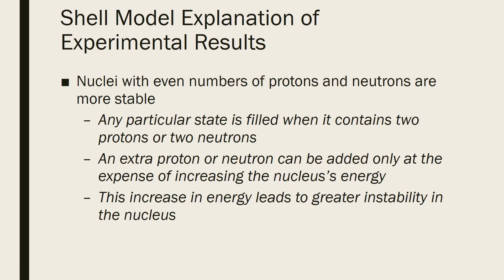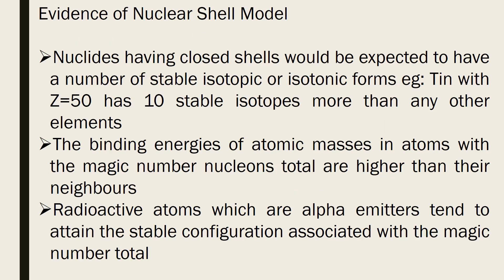If an extra proton or neutron is added beyond a complete state, it increases the nuclear energy, leading to greater instability. For example, if there are 2 neutrons and we add 1 more, the nuclear energy increases and the nucleus becomes highly unstable. This nucleus then has a tendency to emit that extra neutron and return to the stable state.